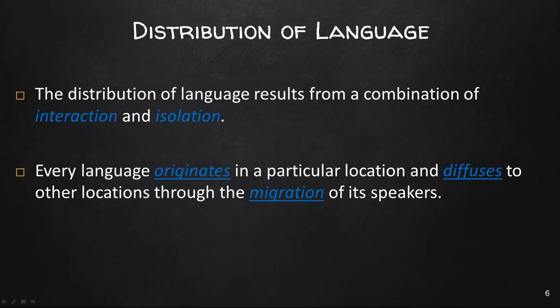The distribution of language results from a combination of interaction and isolation. Every language originates in a particular location and diffuses to other locations through the migration of its speakers. Languages originate, evolve, and become distributed around the world as a result of an interplay of migration, spatial interaction among different groups of people speaking different languages, and geographic isolation. Places that are extremely difficult to reach — because of ocean crossings, large mountains, etc. — will have languages that are isolated and will probably change very little over time.